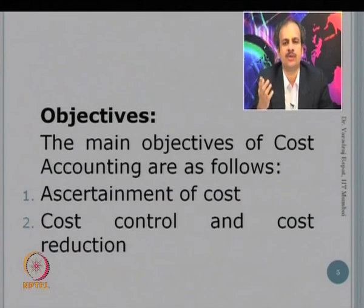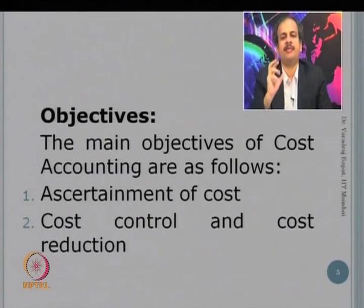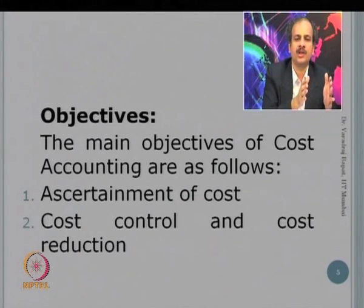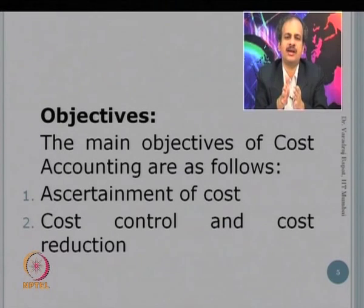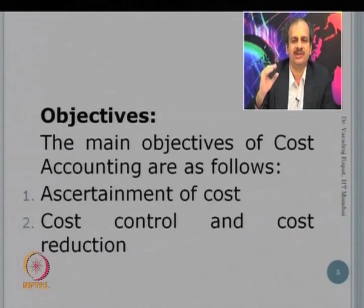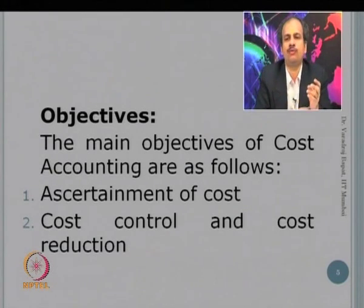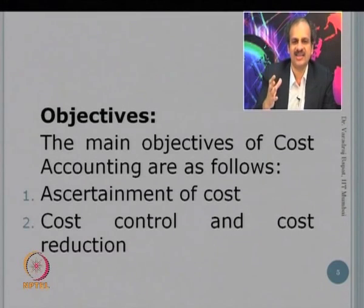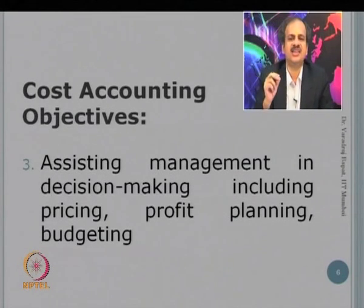The major objectives of cost accounting are: first, ascertainment of cost, for which you record and analyze cost systematically. Second is cost control and cost reduction. Cost control means you set up some norm or standard and ensure that actual costs meet or stay below that standard — that is cost control. Cost reduction is a more innovative exercise where you look for new technologies, alternative raw materials, or alternative ways of production or service delivery, so that cost can be permanently reduced.